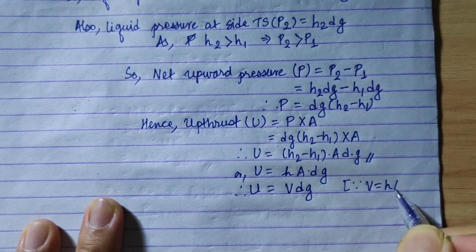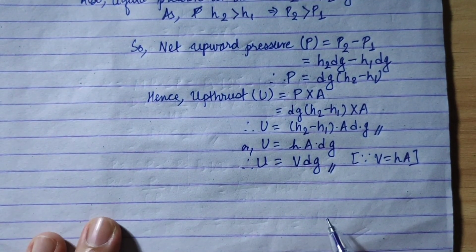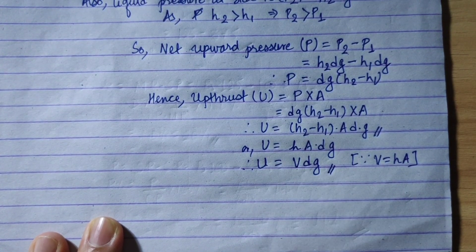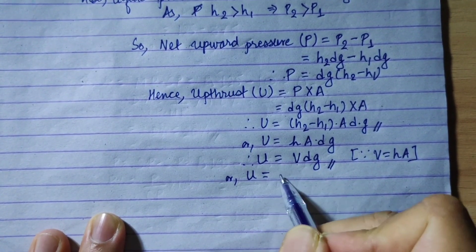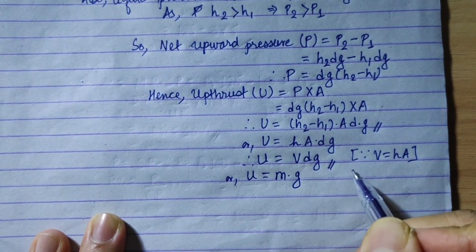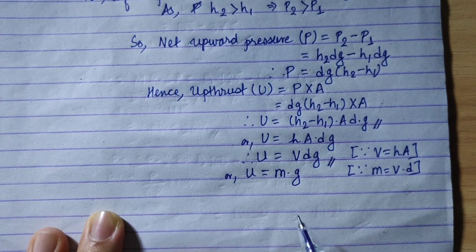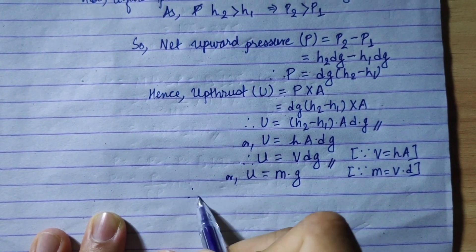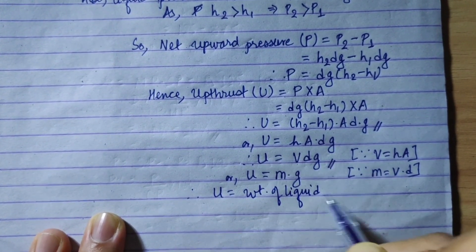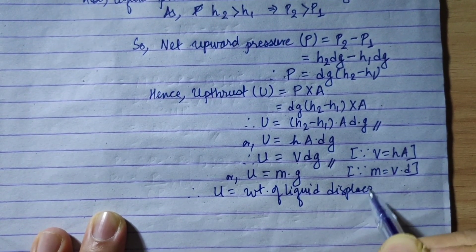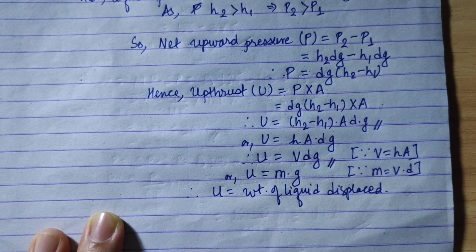Since V = h × A, this relation is proved. Finally, volume times density equals mass. So U = V·d·g = m·g, where m is the mass of liquid displaced. Since mass times g equals weight, upthrust equals weight of liquid displaced. This is how we prove Archimedes' principle theoretically.